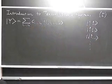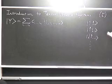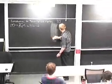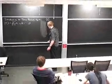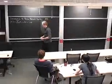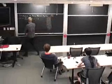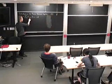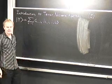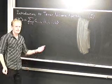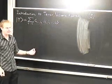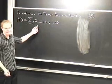Already we have a tensor appearing on the scene, because C is an object consisting of a set of numbers with n indices, and the values these indices take tell you which parameter within C you're looking at. So C is actually an n-index tensor.